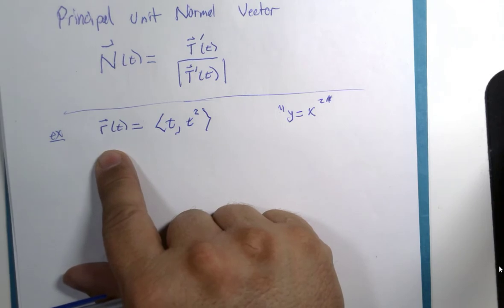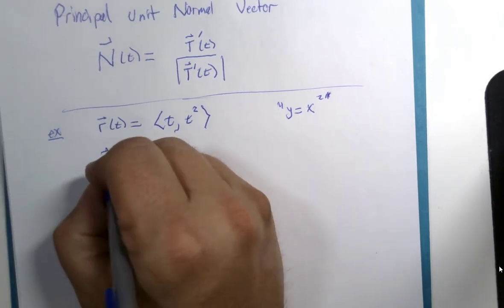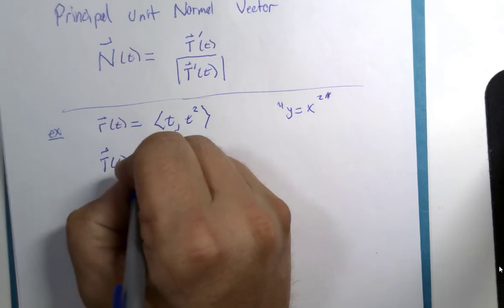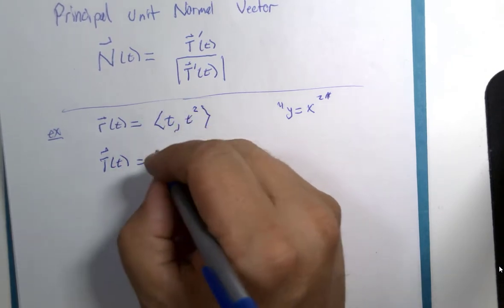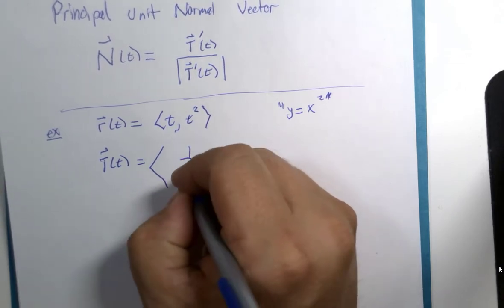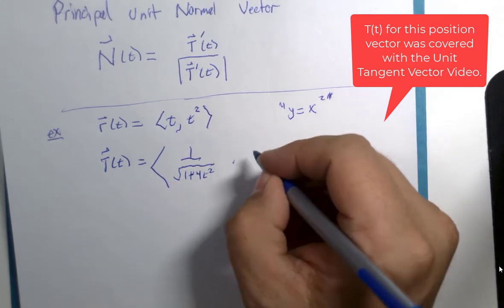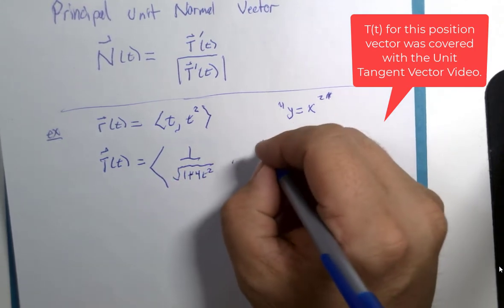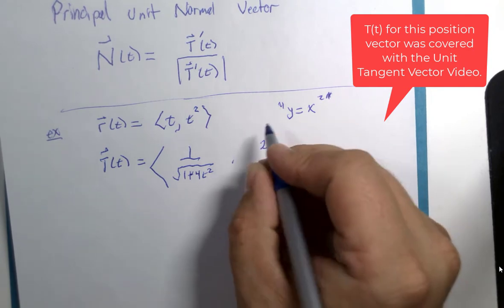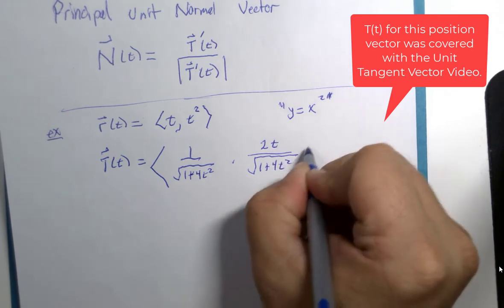And we are trying to determine what this is going to look like. So in a previous segment I showed you that the unit tangent vector for this is the following: 1 over the square root of 1 plus 4t squared, 2t over the square root of 1 plus 4t squared.